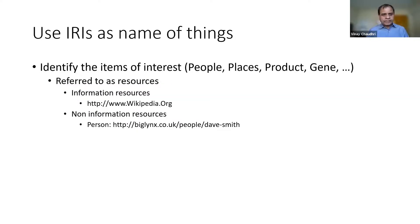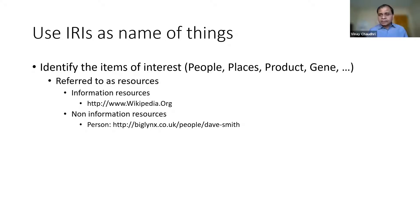The first principle is: use IRIs as names of things. We are used to naming things on the web using URLs, and as discussed in the previous lecture, a URL is also an IRI. The key generalization in the RDF data model is that in addition to information resources, we can also talk about non-information resources — for example, a person. Dave Smith might be a person in the real world without a website, but by creating an IRI for him, we can uniquely refer to him in our dataset.